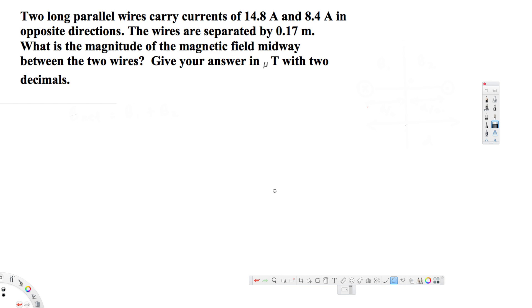What's going on guys, let's look at this problem. This question asks: two long parallel wires carry currents of 14.8 amperes and 8.4 amperes in opposite directions. The wires are separated by 0.17 meters. What is the magnitude of the magnetic field midway between the two wires? Here the question is asking us to find the magnitude of the magnetic field, and the distance is going to be midway between the two wires.